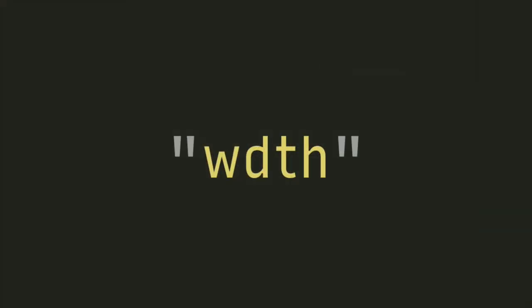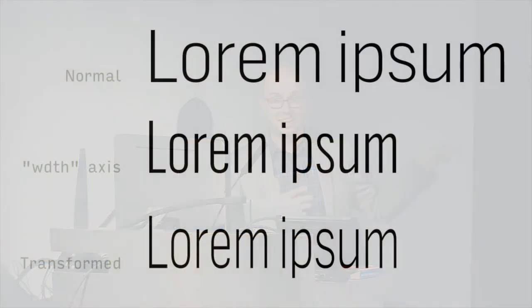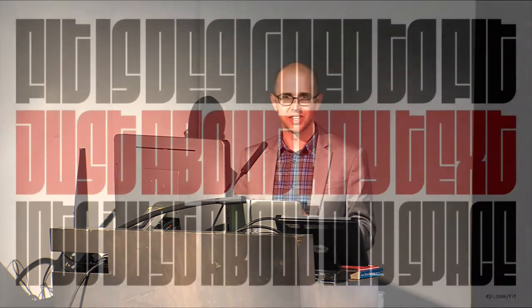My last anecdote about responsiveness is the width axis. The width axis is super fun because distorting and squooshing type is super fun, and we've all been trained not to do it. There's a reason people need to be trained not to do it — it's super convenient, but the problem is it distorts the letterforms. A properly drawn condensed would be better. So I thought: could I make a font designed to fit any context? Regardless of what you type, regardless of where you're setting it, the font will just fit that space. With variable fonts, all of a sudden that was possible. So I made this font called Fit — filling space with maximum impact. Legibility is obviously not a goal.